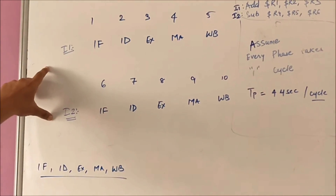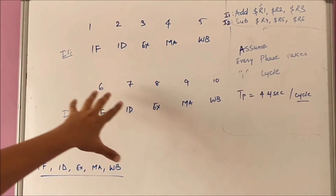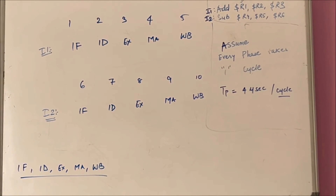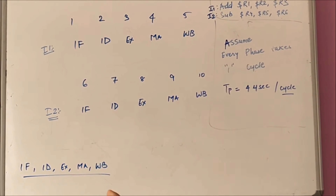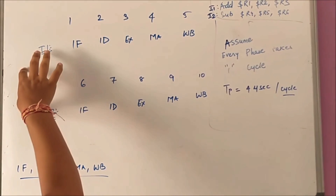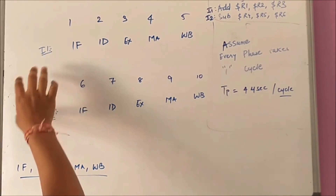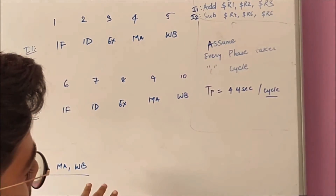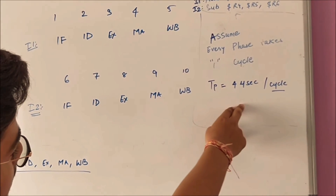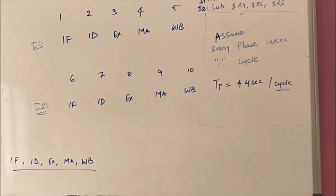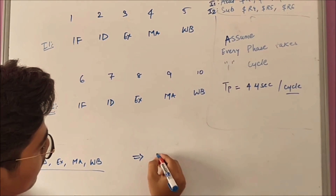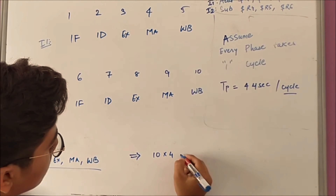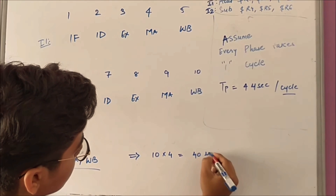For executing I1 and I2, two instructions will need 10 cycles. So let us calculate the time taken by these two instructions to get executed. There are 10 cycles total and each cycle takes 4 microseconds, so it will be 10 into 4 equals 40 microseconds.